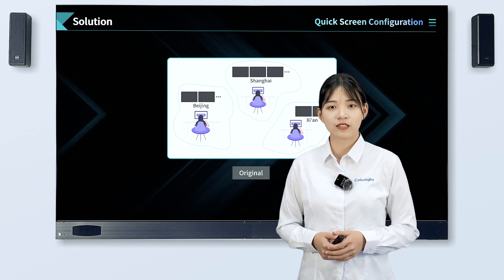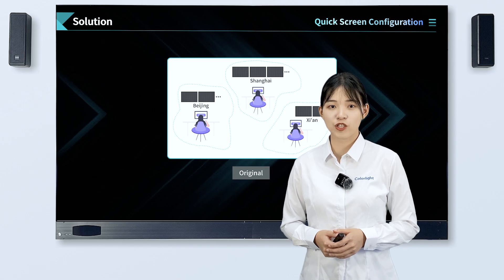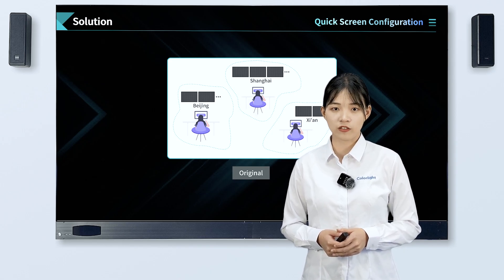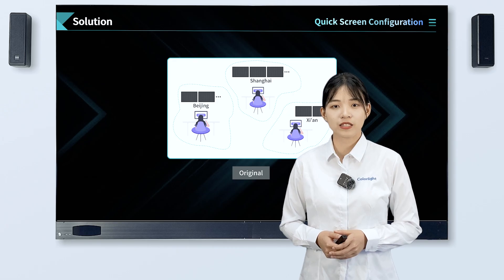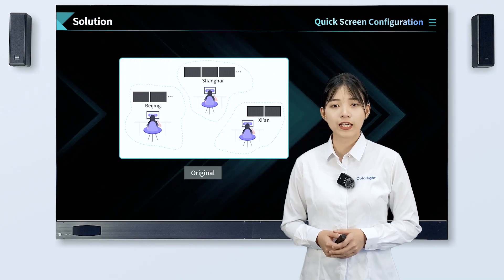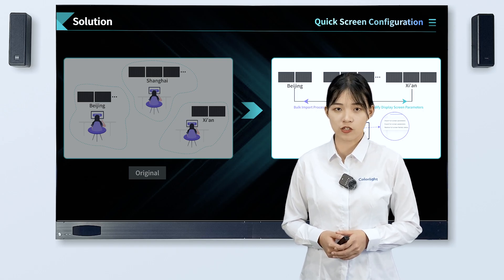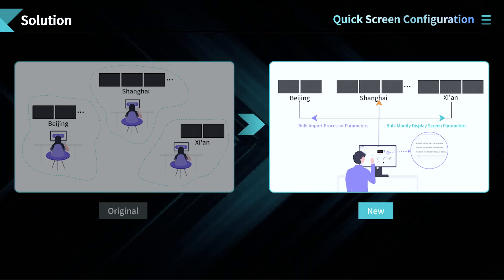Fourth, with numerous devices dispersed nationwide, when the receiving card parameters or mapping change, maintenance personnel need to perform on-site debugging, resulting in low debugging efficiency and high after-sales cost. LED Master supports sending receiving card parameters or mapping remotely, with no need for on-site screen debugging.